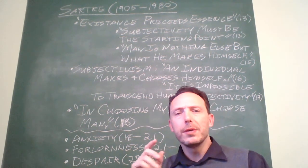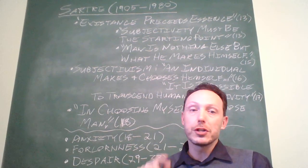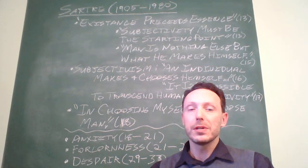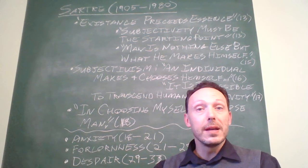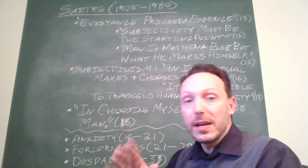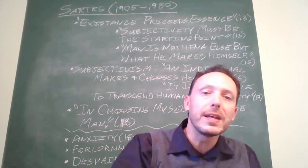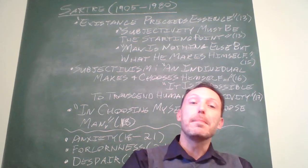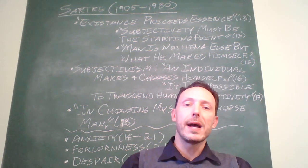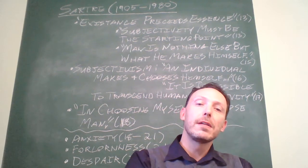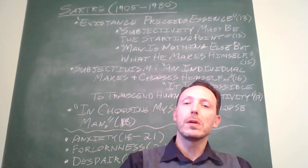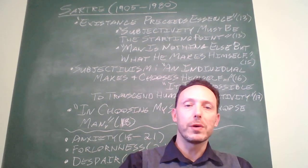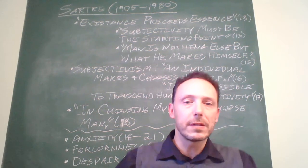Now, effectively what we are doing according to Sartre every time we choose and every time we act is essentially the same thing. If existence precedes essence if we don't have an essence and only manufacture what human beings mean and stand for through our actions effectively through each and every one of our individual choices and actions we are defining the whole of humanity.